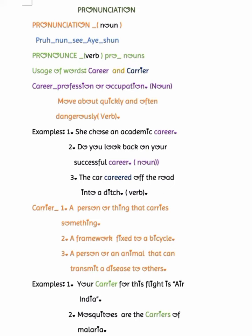The next word is 'carrier.' A carrier is a person or thing that carries something. It is also a framework fixed to a bicycle for carrying luggage or a person. It can also be a person or animal that can transmit a disease to others. Examples: 'Your carrier for this flight is Air India,' and 'Mosquitoes are the carriers of malaria.' This is the difference between these two words.